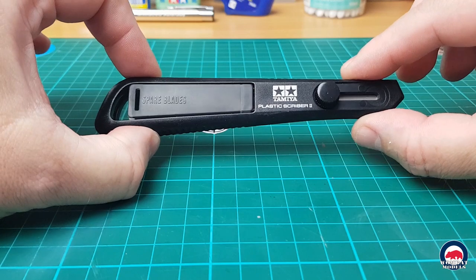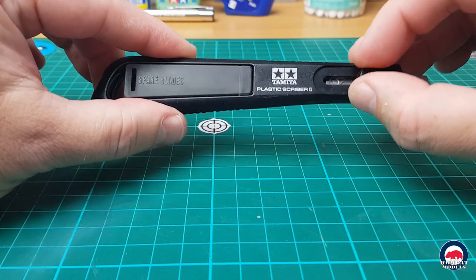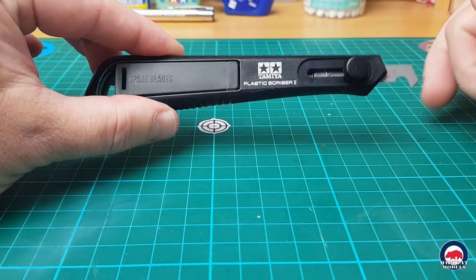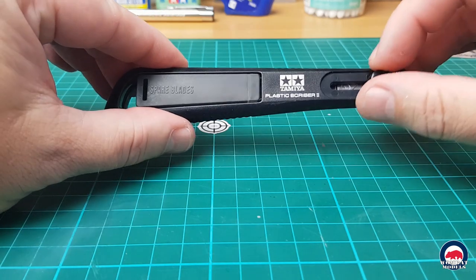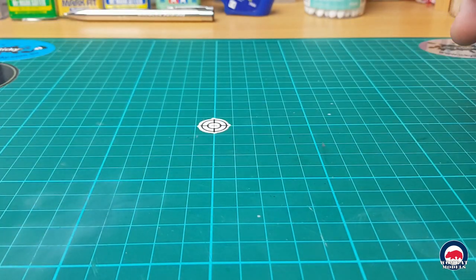And then we have our Tamiya Plastic Scriber 2. So this is a rebranded Alpha Scriber. So you have your scribing blade, you've got a spare blade in the handle there, so it comes in really useful for re-scribing panel lines.